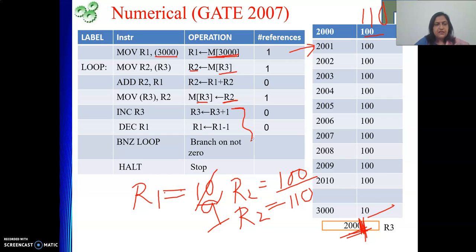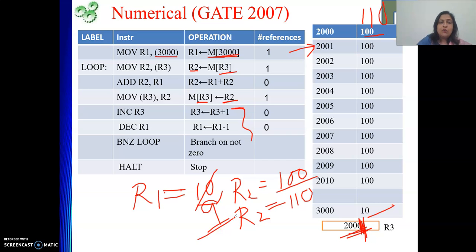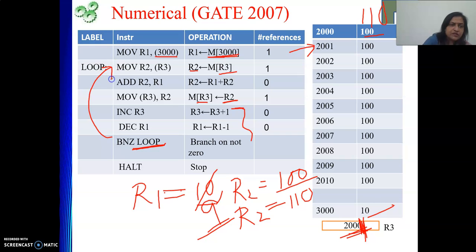The next instruction is BNZ — branch on not equal to zero — which is a conditional branch instruction. It checks the result of the previous instruction, i.e., the content of R1. If R1 is not equal to 0, it jumps to the labeled instruction. The value of the label is part of the instruction's address field, so no memory access is needed for operand fetch. R1 currently holds 9, so the branch is taken and we jump back to repeat the loop.